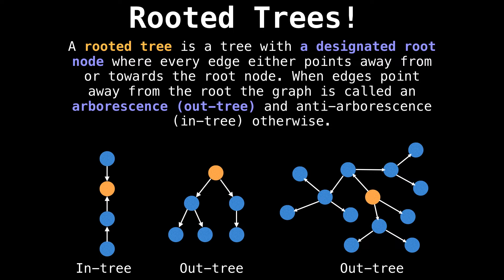A related but totally different type of graph is a rooted tree. The distinction here is that a rooted tree has a designated root node where every edge either points away from or towards the root node. When edges point away from the root node, the graph is called an arborescence or an out-tree, and an anti-arborescence or in-tree otherwise. Out-trees are by far more common than in-trees from what I've observed. It is also fairly common for people to refer to a rooted tree simply as a tree instead of an in or out-tree, but there is an important distinction there.